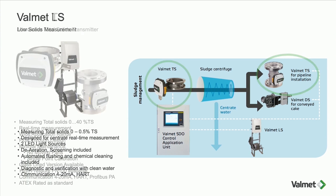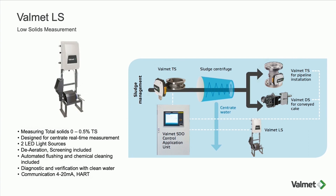The second technology is Valmet LS, designed specifically to measure from the centrate area of the centrifuge — measuring the filtrate coming from the bottom of the centrifuge. We can measure up to 0.5 percent total solids here. It uses an optical measurement method with LED light sources giving three different light phenomena: backscattering, absorption, and depolarization. Those three combined signals give a good calibration against centrate.